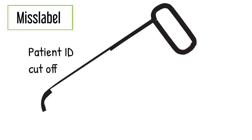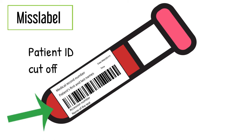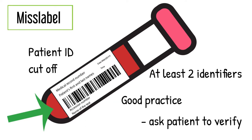Mislabel. This includes things like part of the label cut off, incomplete names, and medical record number. The label should be legible and fixed to the specimen tube. To prevent this, properly identify the patient with at least two patient identifiers prior to phlebotomy and label the tube right away in front of the patient. It is a good practice to have the patient look at the labeled tube to double check and verify that it is their sample before letting the patient go.